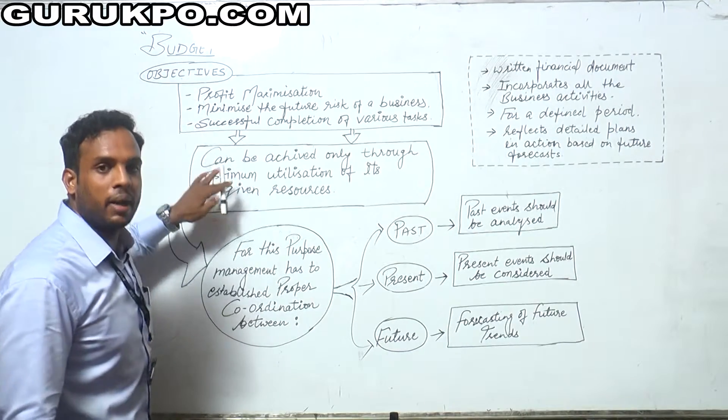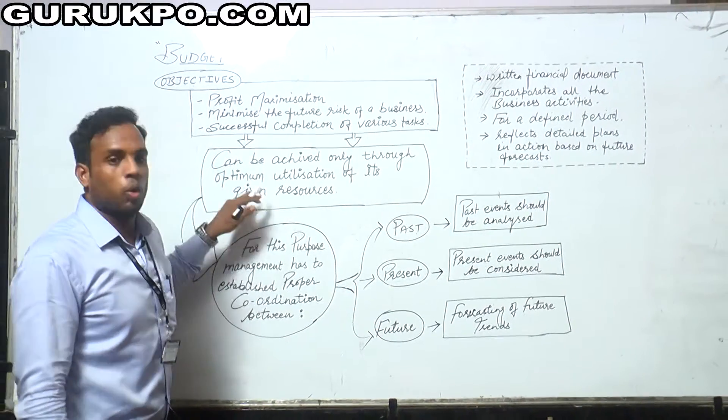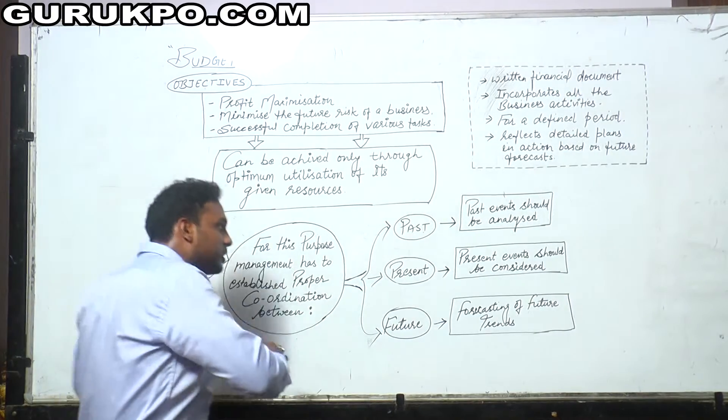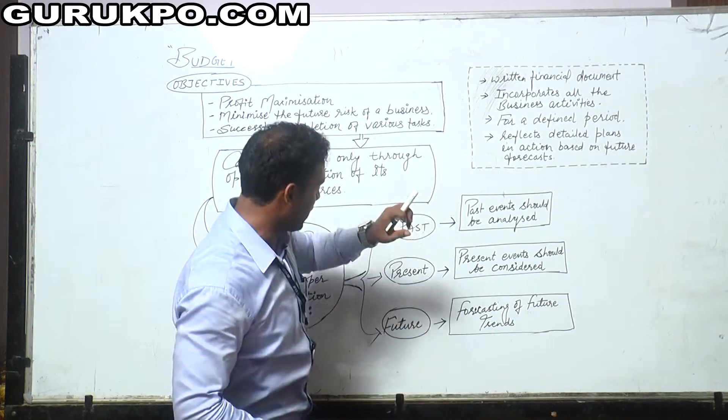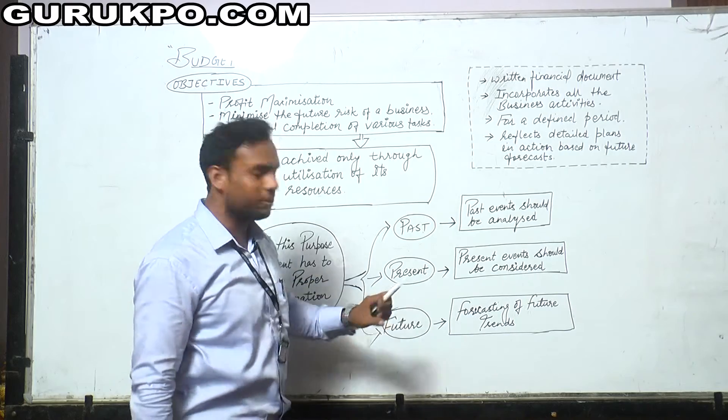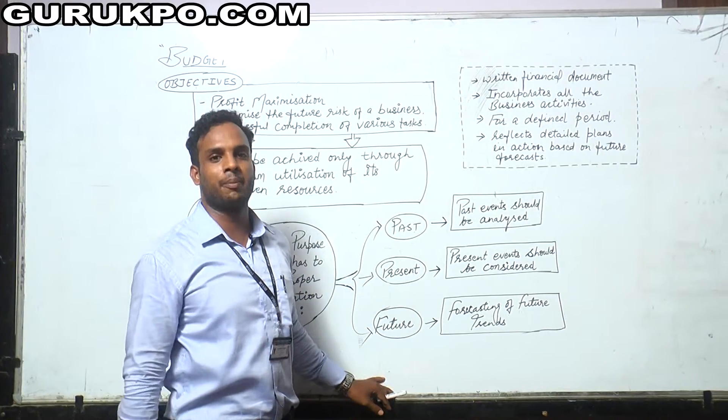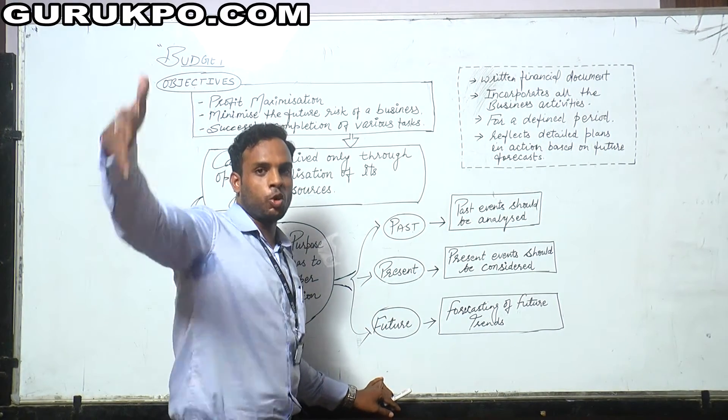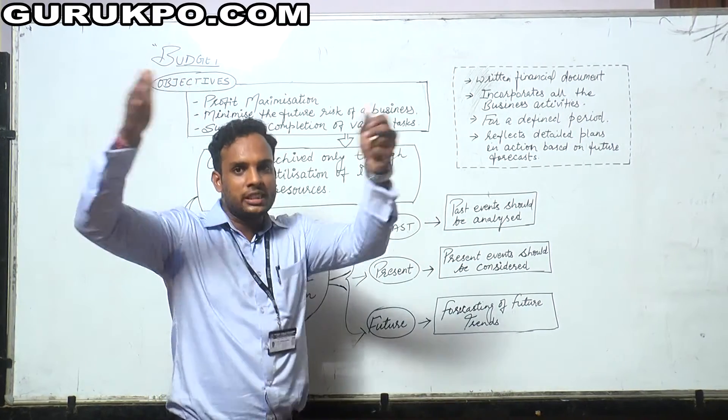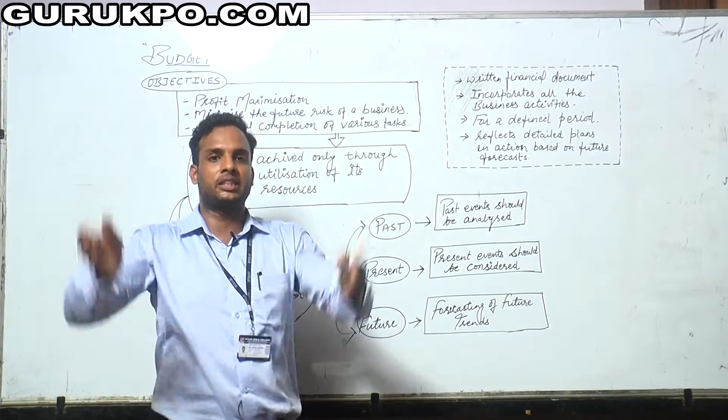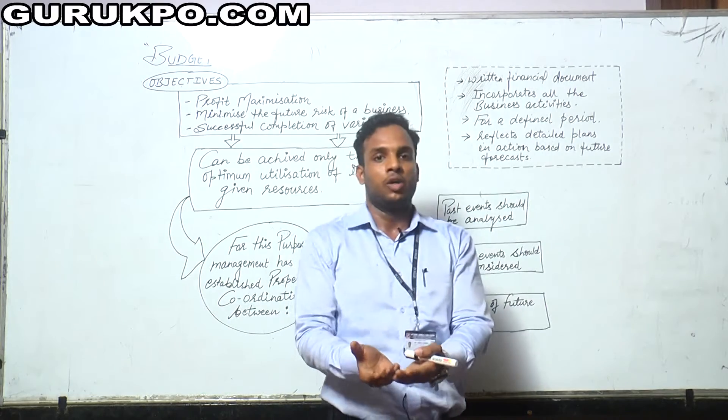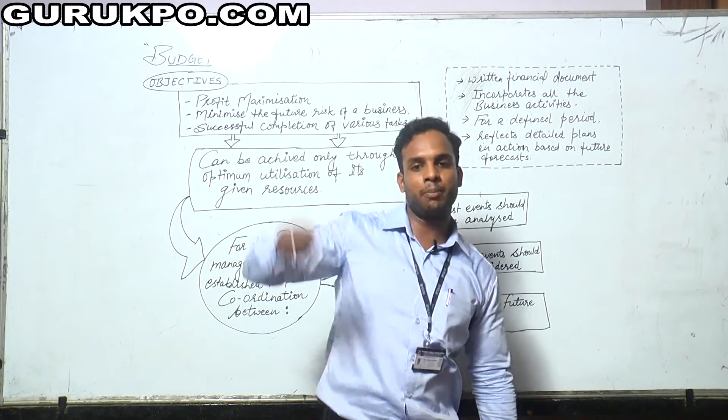To achieve our objectives with minimum resources, we need optimum utilization, and for this we have to look at past, present, and future. This point, when concluded in a format, becomes a written document with numerical data considered - this is called budget.